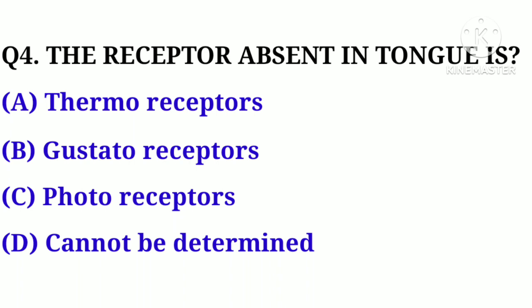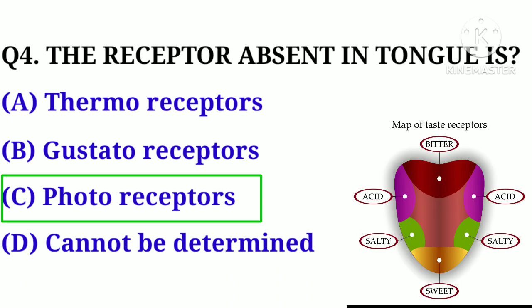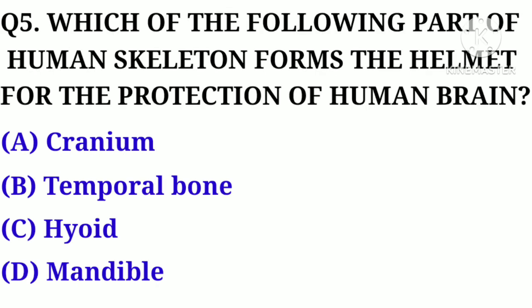Question number 4. The receptor of sand in tongue is: Option A. Thermoreceptor, B. Gestatoreceptor, C. Photoreceptor, D. Can't be determined. Correct answer: Option C.